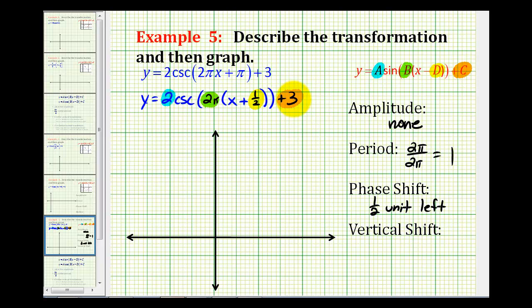And then c determines the vertical shift, so this graph is shifted up three units. Now this is a pretty involved graph, so what we're going to do is actually graph y equals two sine two pi times the quantity x plus one half plus three. We can use the graph of this sine function to help us graph the cosecant function.